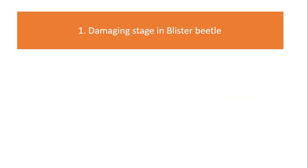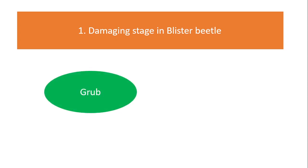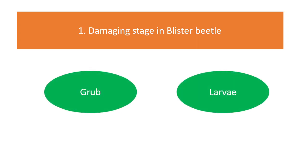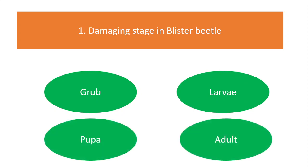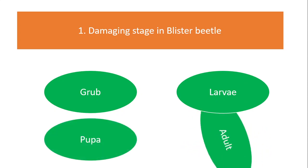First question: what is the damaging stage in blister beetle? Options are grub stage, larvae, pupa, or adult. The answer is adult.